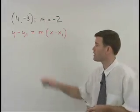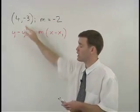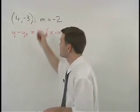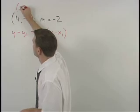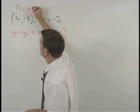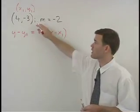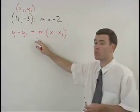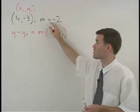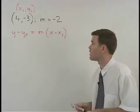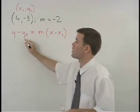Remember that our point, in this case 4 negative 3, represents x1, y1 in our formula. So when we plug all our given information into the point slope formula, including our slope, we have y minus y1.